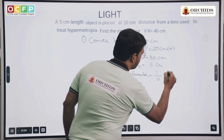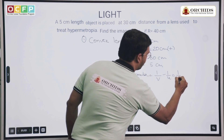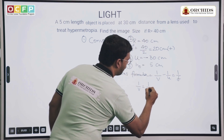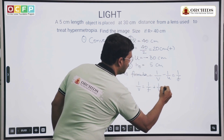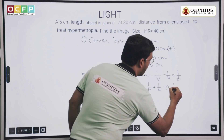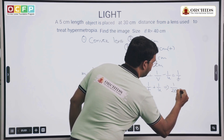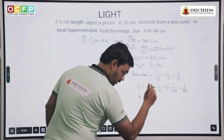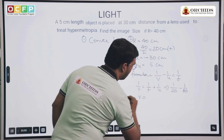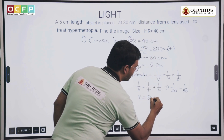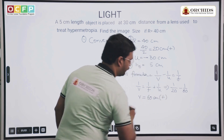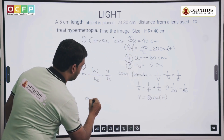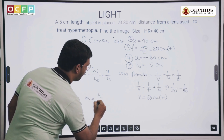The lens formula is 1 by v minus 1 by u equals 1 by f. From this, 1 by v equals 1 by f plus 1 by u. Substituting all the values, we get 1 by 20 minus 1 by 30, and after calculations we get v equals 60 centimeters (positive).